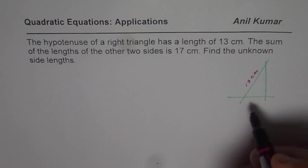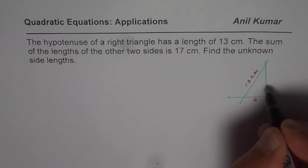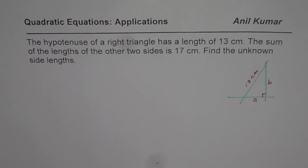The sum of other two sides is 17. Let's call them A and B. And what we know here is this angle should be 90 degrees.